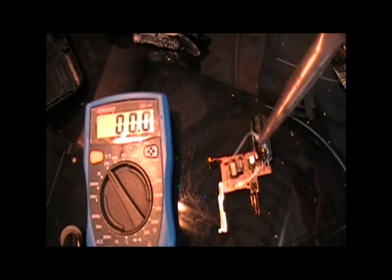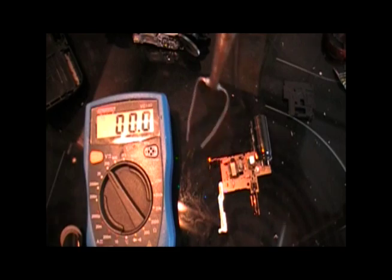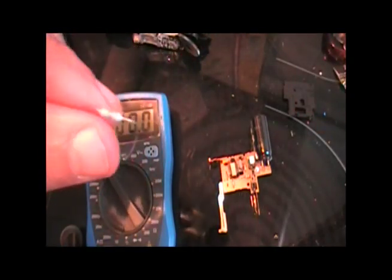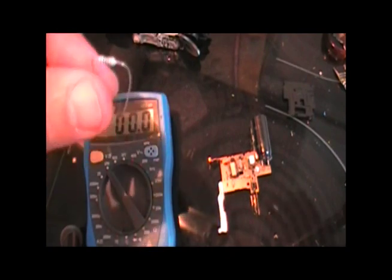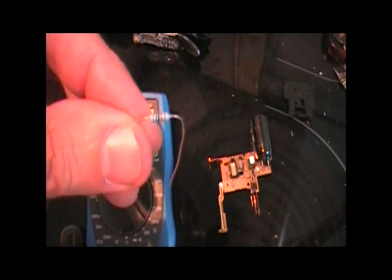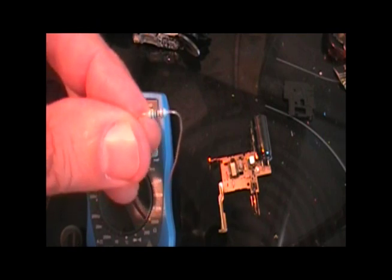To be absolutely safe, what I do is take a 1 kiloohm resistor. A 1 kiloohm resistor is, here in Germany, one that has the brown, black, black, brown, brown color bands.